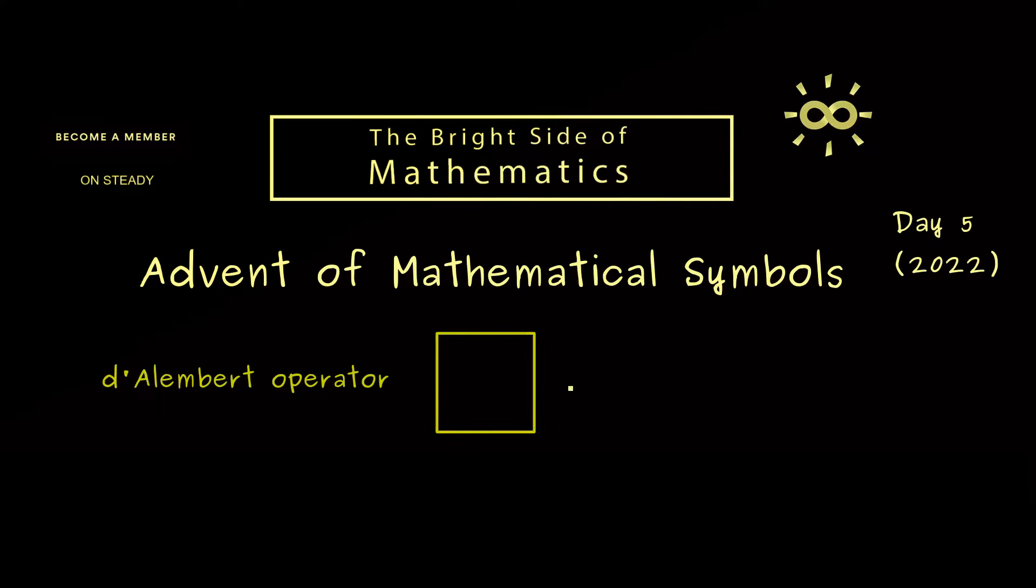You might already know mathematicians often use this box to denote the end of a proof, but here we will talk about another usage of this symbol, namely we talk about a differential operator.